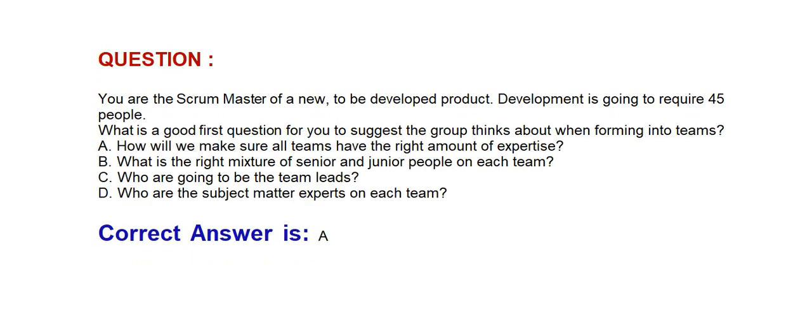Next question: You are the scrum master of a new to-be-developed product. Development is going to require 45 people. What is a good first question for you to suggest the group thinks about when forming into teams? Option A: How will we make sure all teams have the right amount of expertise? Option B: What is the right mixture of senior and junior people on each team? Option C: Who are going to be the team leads? Option D: Who are the subject matter experts on each team? Correct answer is Option A: How will we make sure that all teams have the right amount of expertise?